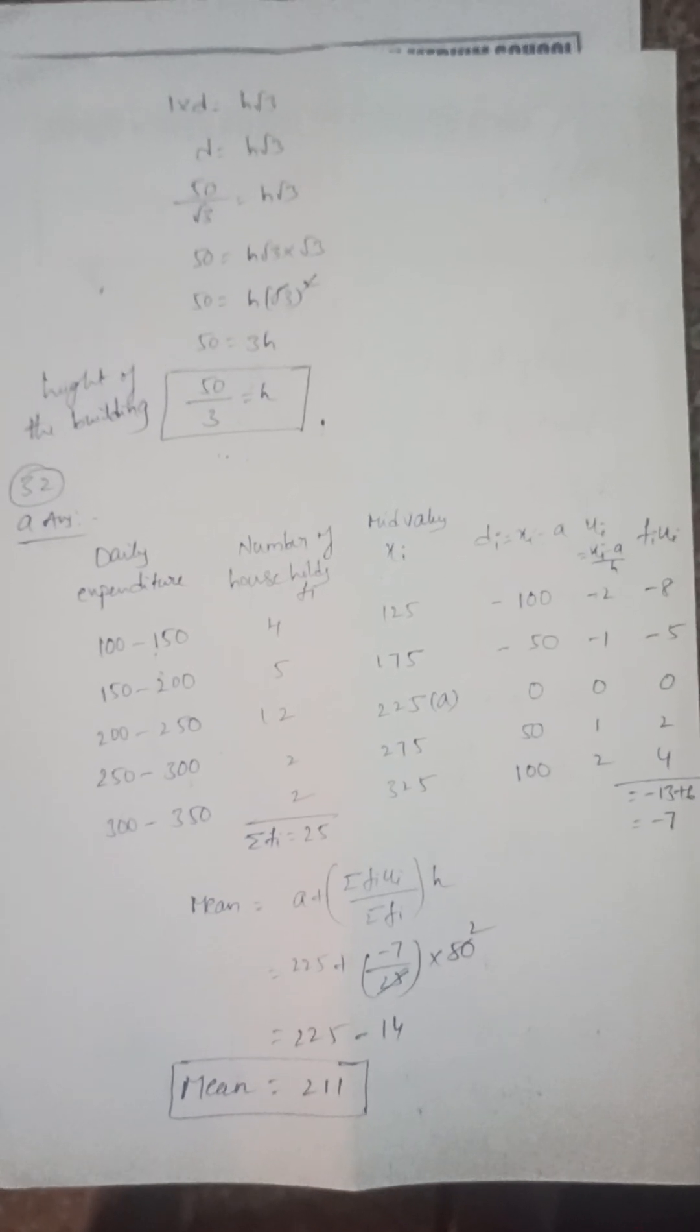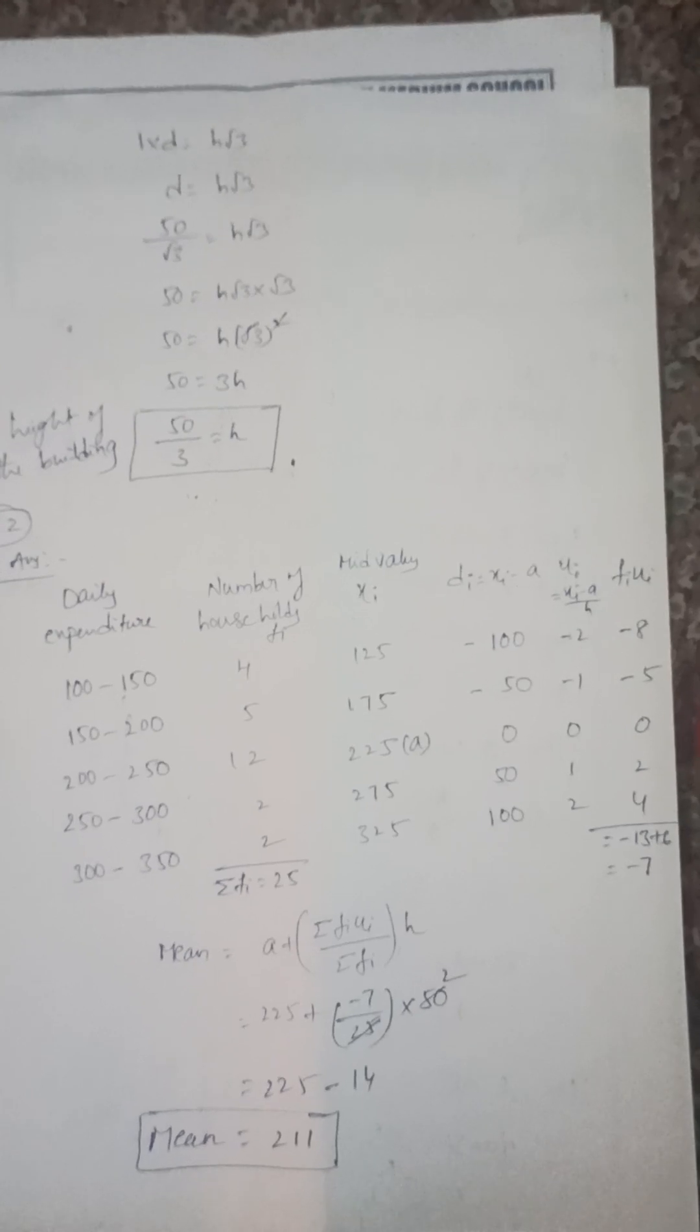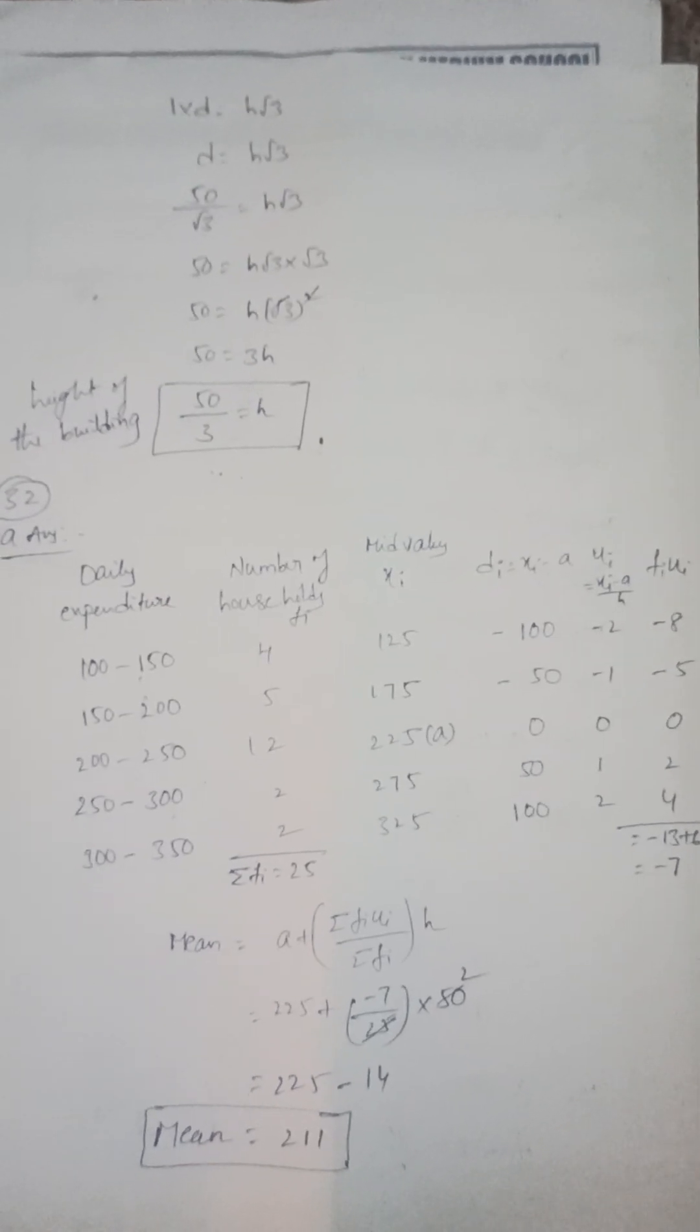32A: find the mean of the given data. That is 211. So here I can use the step deviation method.